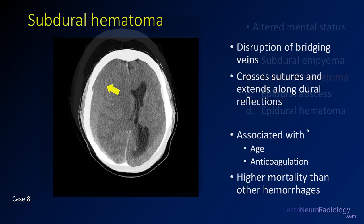This is a case of subdural hematoma. You have a high-density extra-axial collection along the right convexity that wraps around dural reflections and crosses the likely location of the coronal suture, indicating it's in the subdural space. The high density and gradient of blood products makes it more likely to be blood rather than infection. These have a bad prognosis — the older the patient, if they're on anticoagulation, and the larger the size, the worse the prognosis. Subdural hematomas have higher mortality than other traumatic hemorrhages, including traumatic subarachnoid and epidural hematoma.